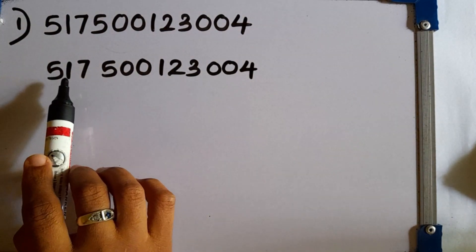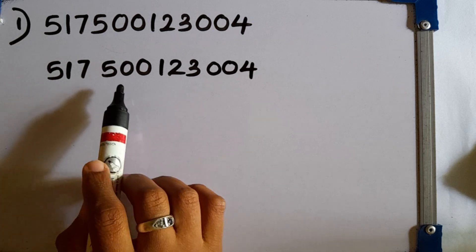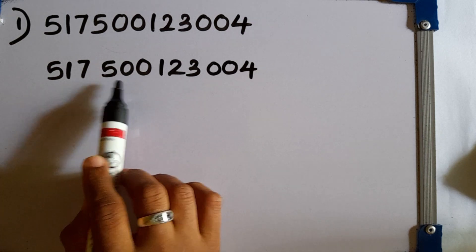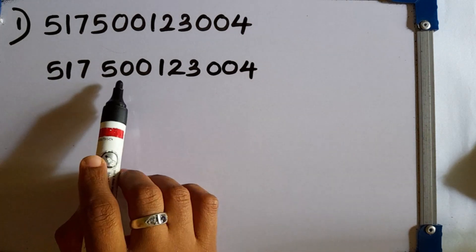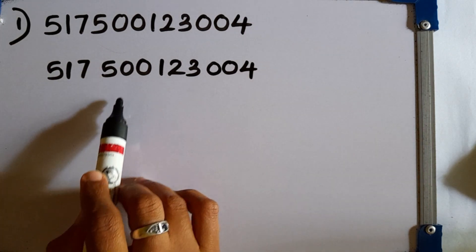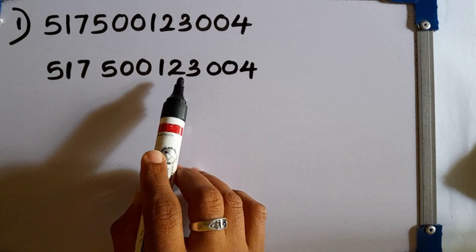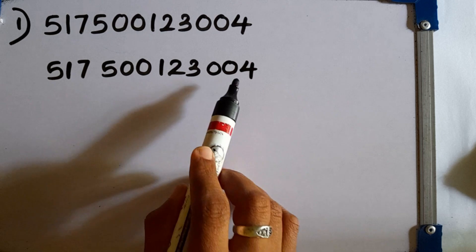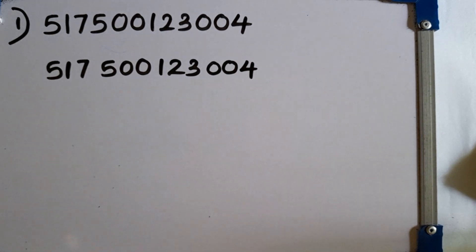This is the millions zone, then millions period, thousands period, and units period. These are the period names used in standard form.